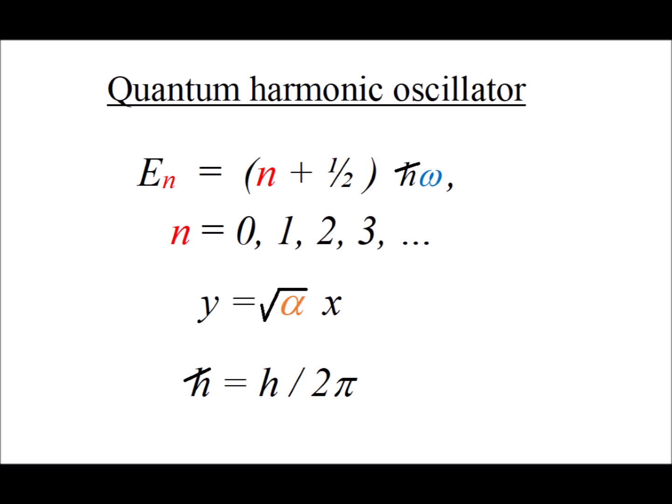As a reminder, for the quantum harmonic oscillator, the energies are n plus a half times h-bar omega, where n is integers starting from zero. H-bar is Planck's constant h divided by 2 pi. Omega is the angular frequency. And as a convenience, when we were deriving and graphing the wave functions, we used the substitution that y is equal to the square root of alpha times x. Look up in the right-hand corner for the cards to see where we had done that before.